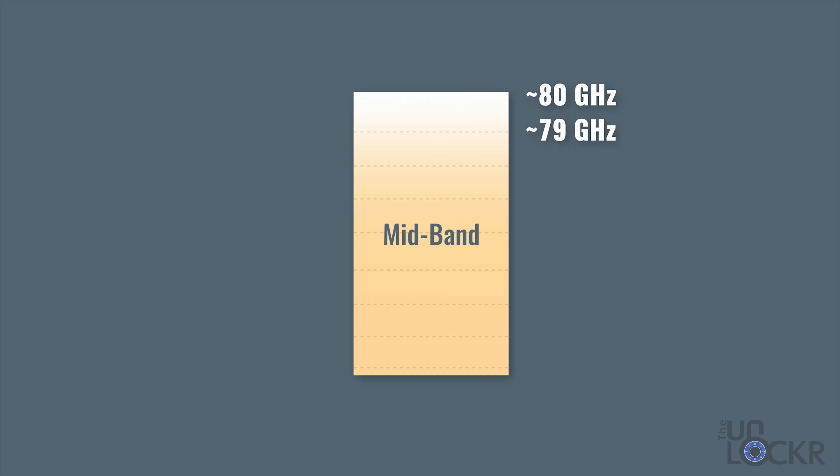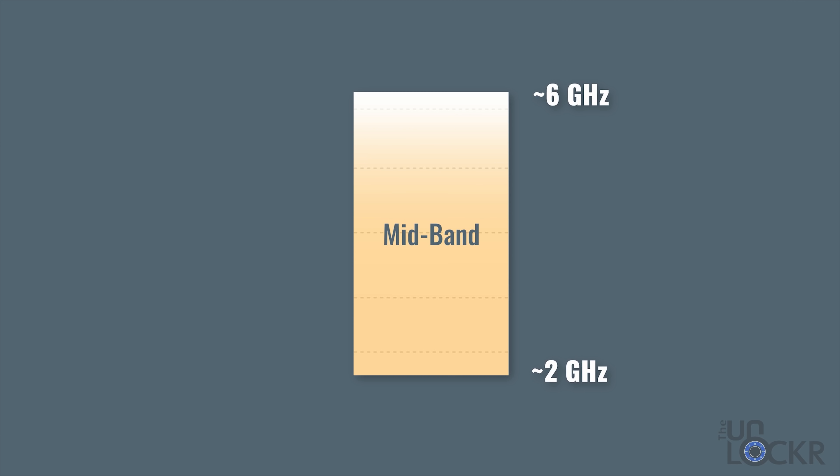Next is sub-six. Sub-six technically means below six gigahertz, but when you hear it referred to with 5G, it generally means between two and six gigahertz. It's often called mid band because it's a little bit higher than the low band, more crowded frequencies we just talked about, and below the millimeter wave high band frequencies that we'll talk about in a sec.